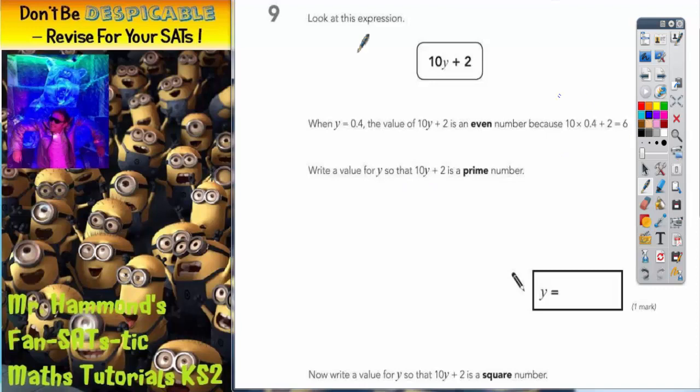Question number 9. Look at this expression 10y plus 2. When y is 0.4, the value of 10y plus 2 is an even number. This is because if you do 10 lots of 0.4, this bit, you're going to get 4. And when you add 2 onto it, you're going to get 6, which is even.